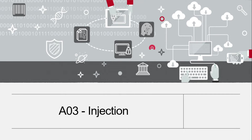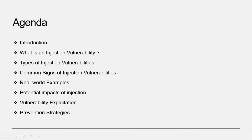Hello everyone. I hope our last video of the OWASP Top 10 series on vulnerability A02 Cryptographic Failures was helpful and informative. In this video, we're back with our next step in our journey through the OWASP Top 10 with vulnerability A03 Injection. We will see what injection vulnerability is, the different types, common signs, real-world examples, potential impact, and preventions.